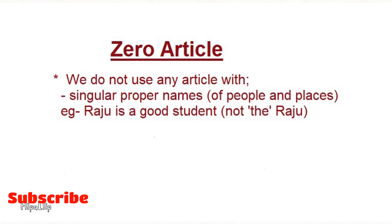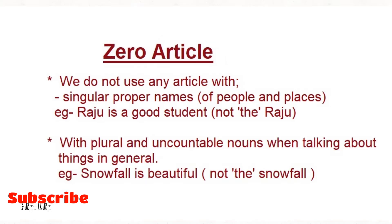The first thing is that we do not use any article with singular proper nouns. For example: 'Raju is a good student.' We won't say 'The Raju is a good student' — that is incorrect. It is simply 'Raju is a good student' because 'Raju' is a singular proper noun.